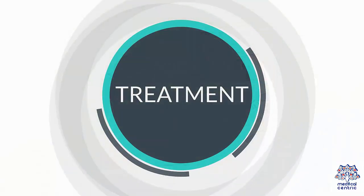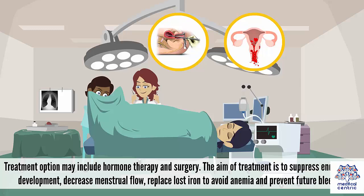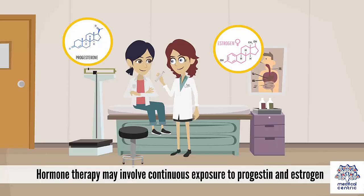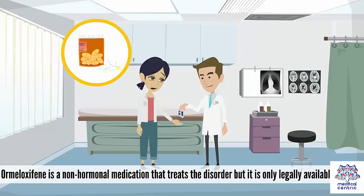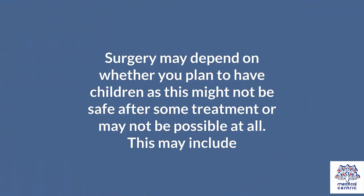Treatment options may include hormone therapy and surgery. The aim of treatment is to suppress endometrial development, decrease menstrual flow, replace lost iron to avoid anemia, and prevent future bleeding. Hormone therapy may involve continuous exposure to progestin and estrogen. Ormeloxifene is a non-hormonal medication that treats the disorder but is only legally available in India.